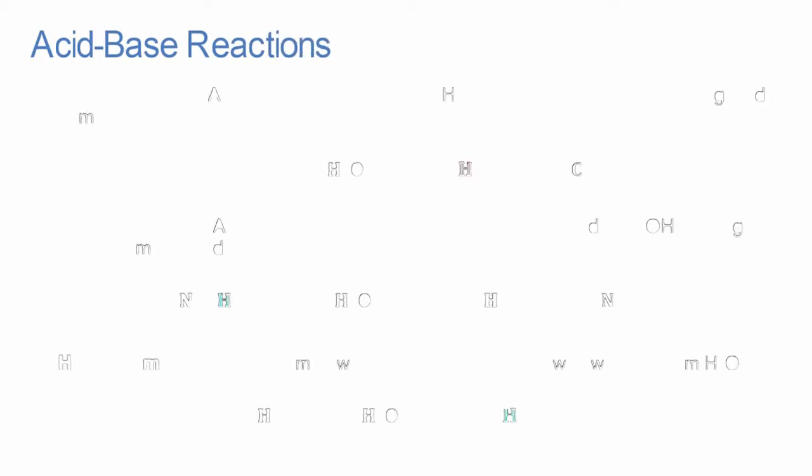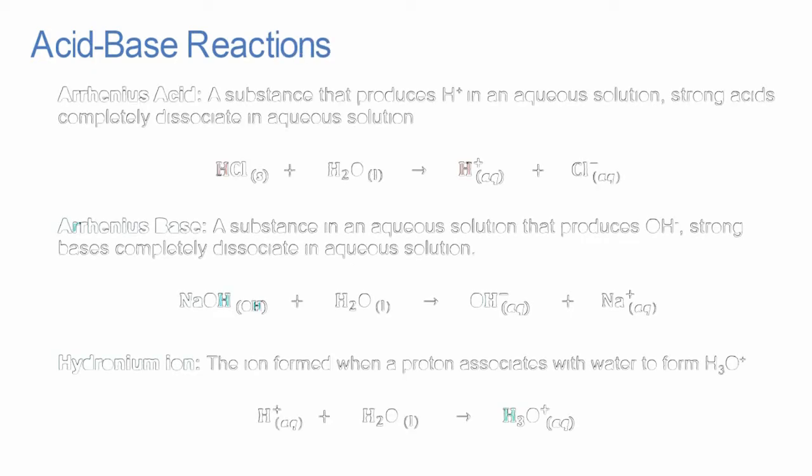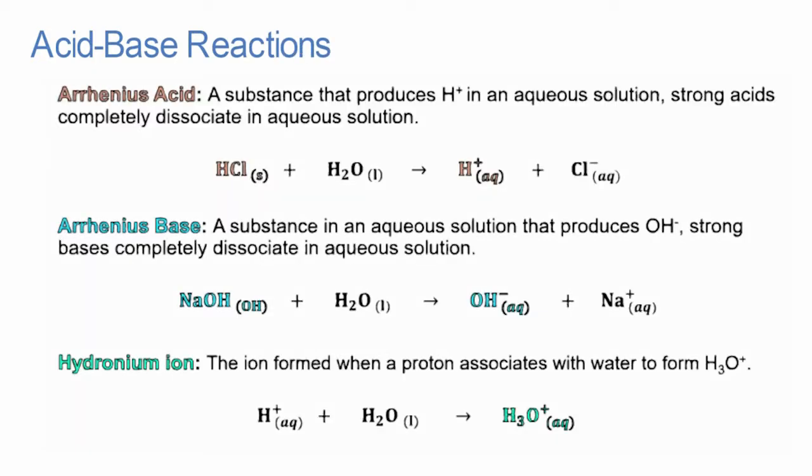An Arrhenius acid is a substance that produces protons in an aqueous solution. A proton is the hydrogen ion with a positive charge. A proton associates with a water molecule to form the hydronium ion. An Arrhenius base is a substance that produces the hydroxide ion in an aqueous solution.